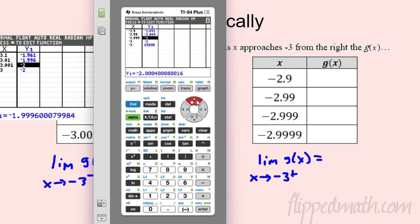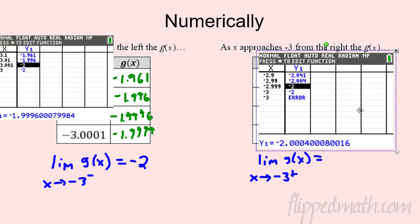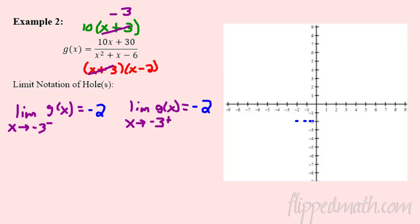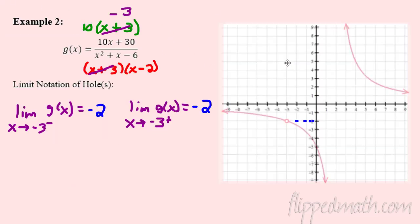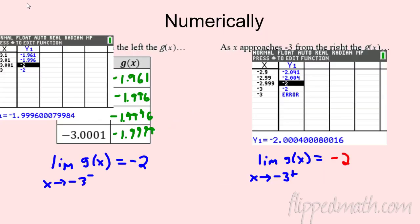These numbers are getting so close to -2, so I'll put -2 there — you may need to hover over the points to see the real values. Going back to the graph, you can see I'm approaching -2. You can use a graph or a table to see what's happening with your limit.